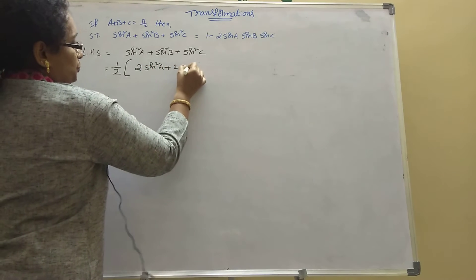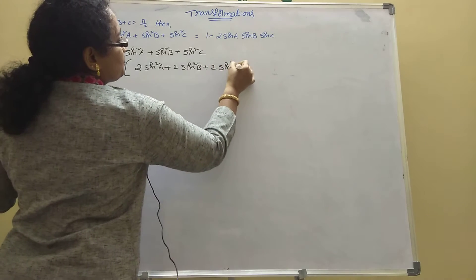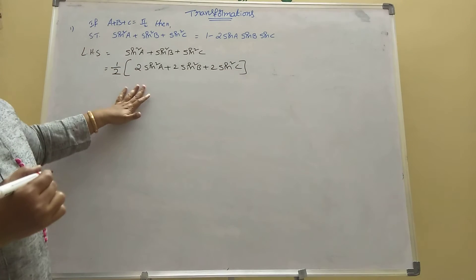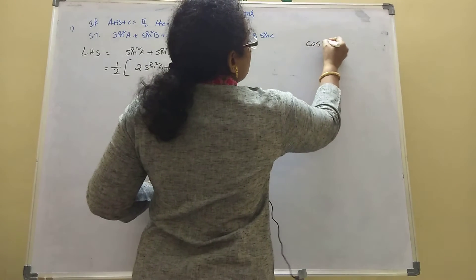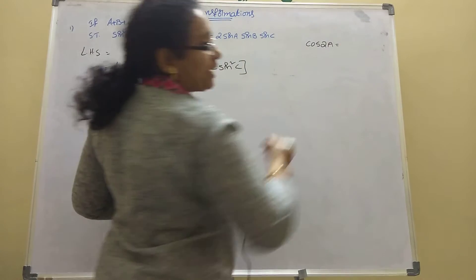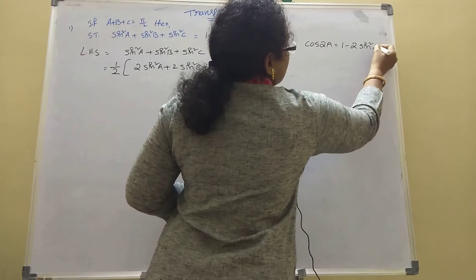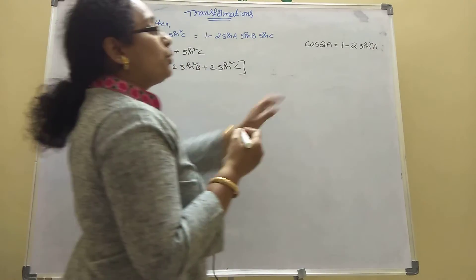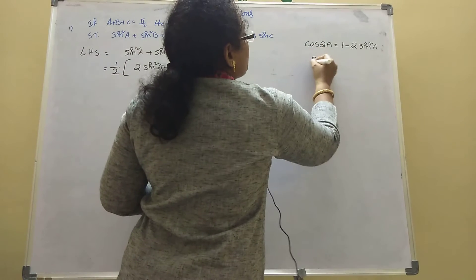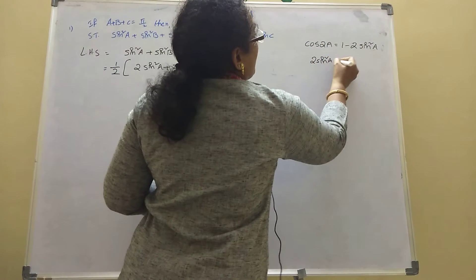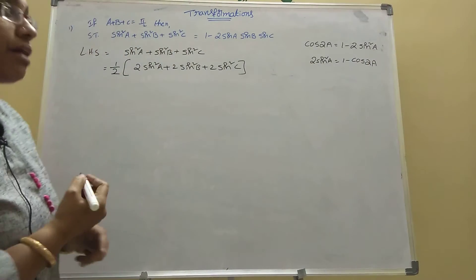So we have 1 by 2 times (2 sin square A plus 2 sin square B plus 2 sin square C). Now the cos 2A formula in terms of sin is: cos 2A equal to 1 minus 2 sin square A. We want only 2 sin square A, so rearranging: 2 sin square A equal to 1 minus cos 2A. Apply this here.